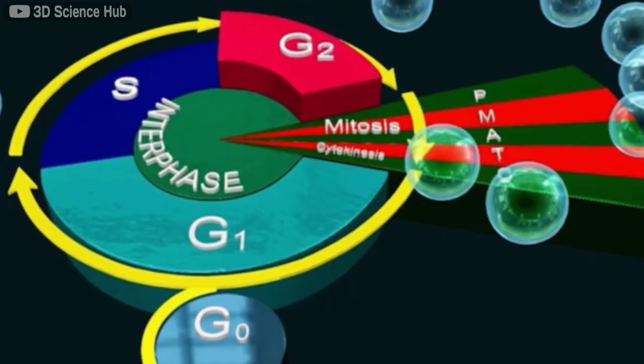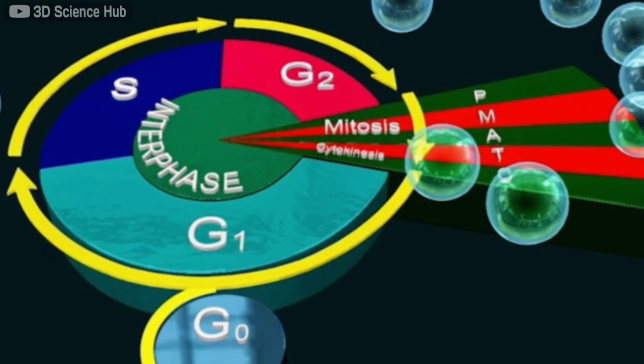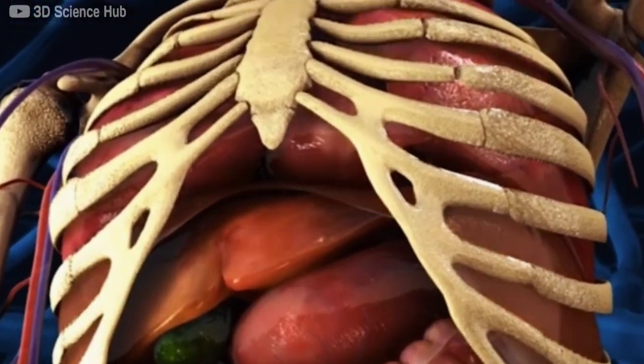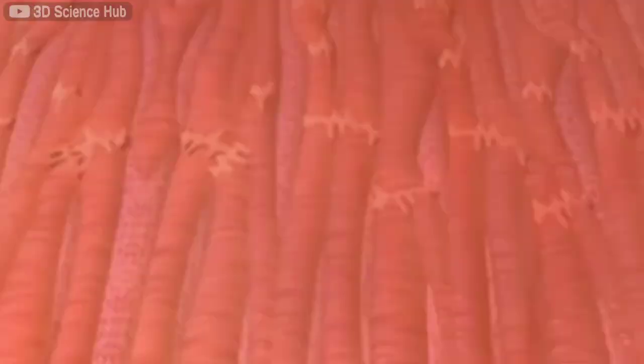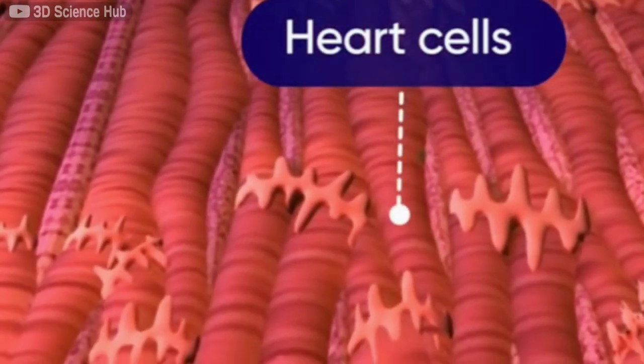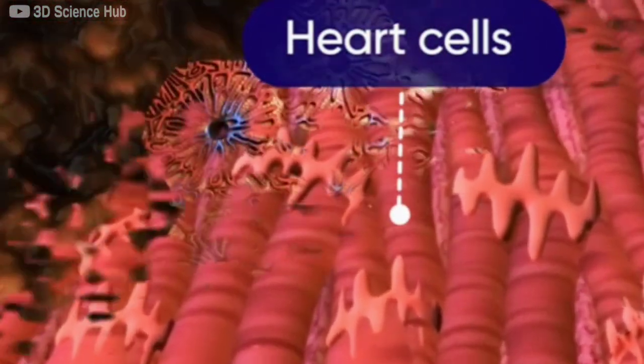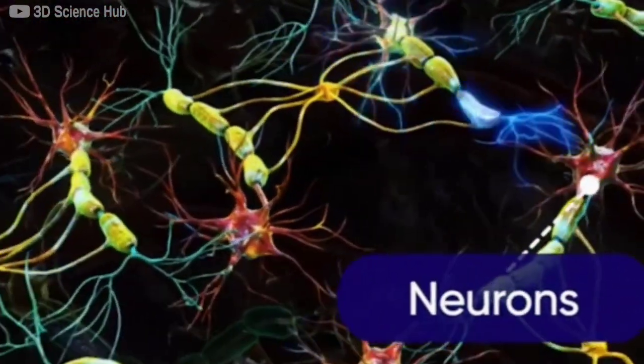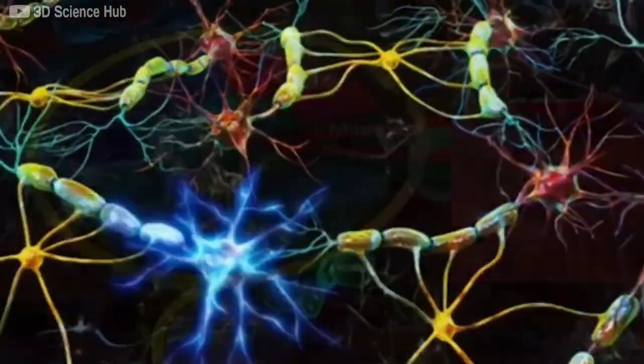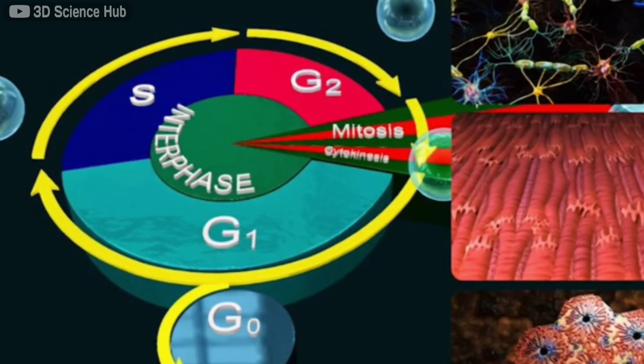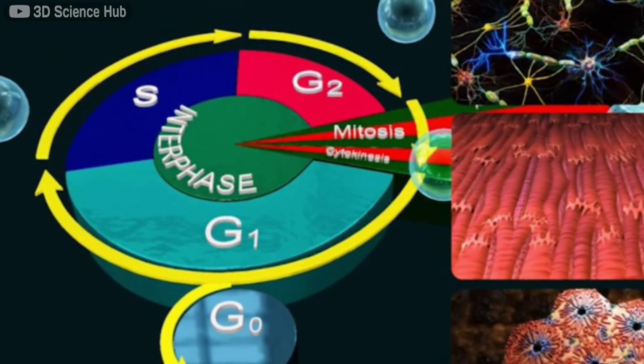We will see what happens in each one of these phases, but first let's learn about some cells that don't divide at all. That's right, some cells don't divide at all, or they do it occasionally. Some examples are heart cells, liver cells, and neurons. So what happens to these cells? Well, after they finish the M phase, G1 phase of the interphase, they enter the quiescent stage of the cycle.